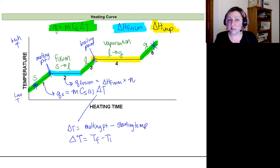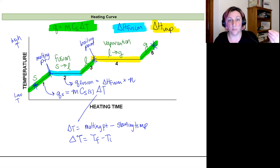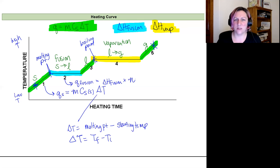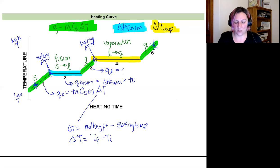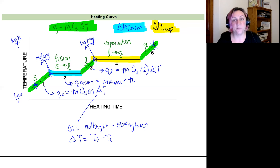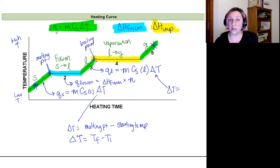If you're given molar heat capacity instead of specific heat capacity, you use moles × molar specific heat × ΔT for the temperature-increasing regions — always make sure your units match. For region three, if given mass, q_liquid = mass × specific heat of liquid × ΔT, where ΔT = boiling point minus melting point.